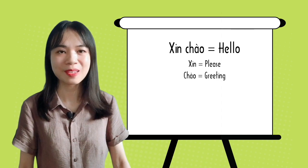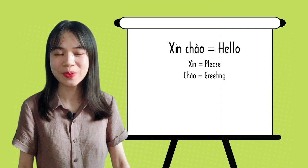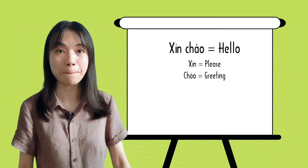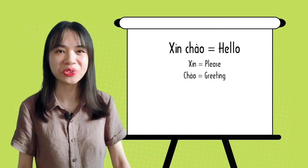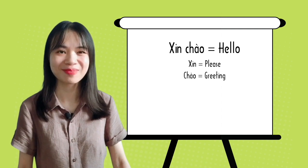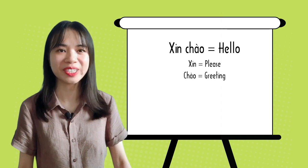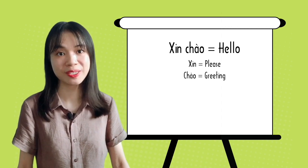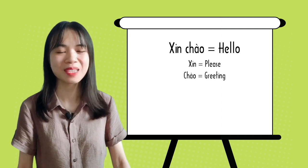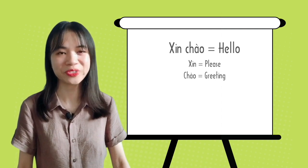Xin chào — that means hello in Vietnamese. We can break it down: Xin is please and Chào is greeting. Vietnamese say hello differently depending on the type of person or people they meet, but let's learn the simplest way for now.